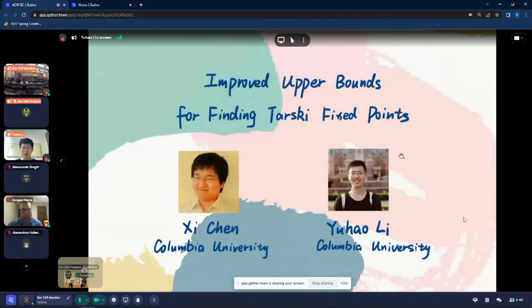Okay, hello everyone. I'm Yu Haoli from Columbia University. Today, I'm very excited to talk about our recent work on improved upper bounds for finding Tarski fixed point. This is a joint work with Chi Chen from Columbia University.